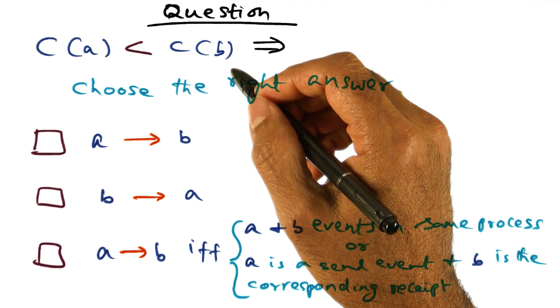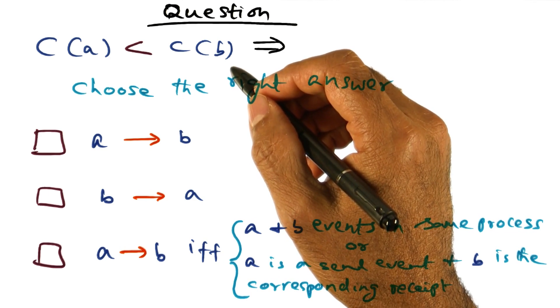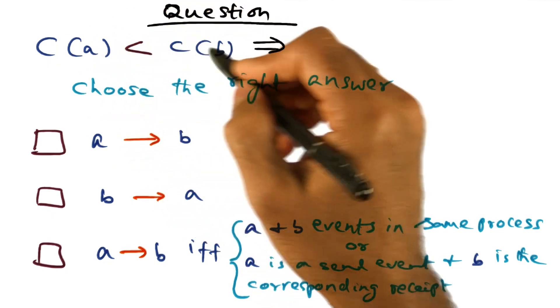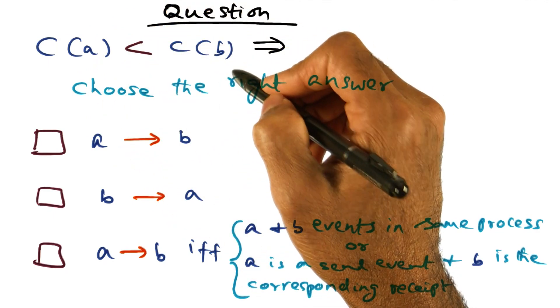And it so happens, when I look at the record of all the timestamps associated with the events, I see that the timestamp associated with A is less than the timestamp associated with B.